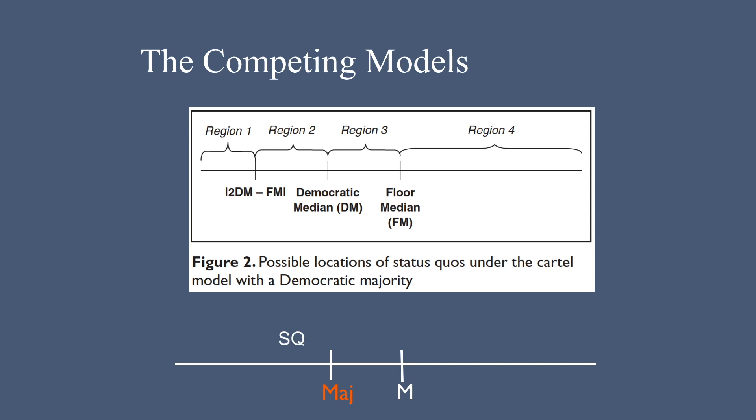Now this is the case where the status quo is in Region 2. In this case, the models differ in their predictions. The floor model, or the majoritarian model, predicts that the outcome should still be at M. But the party or cartel model predicts that the outcome will be at the point marked on the screen.